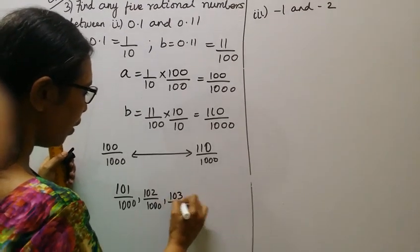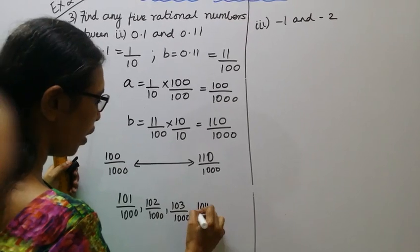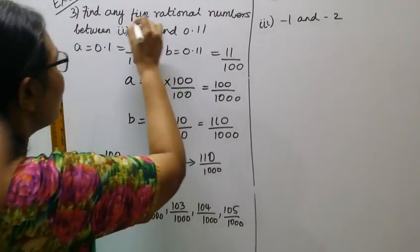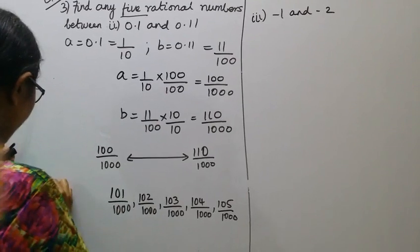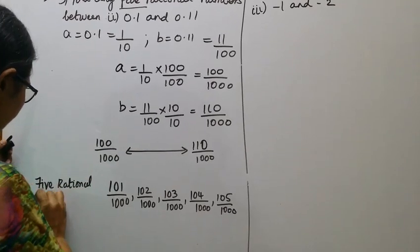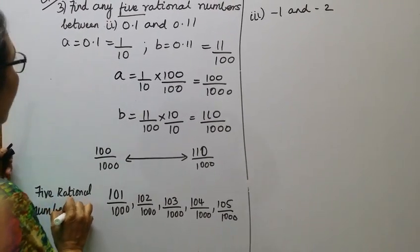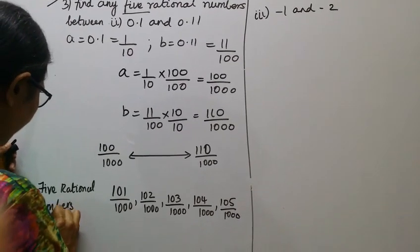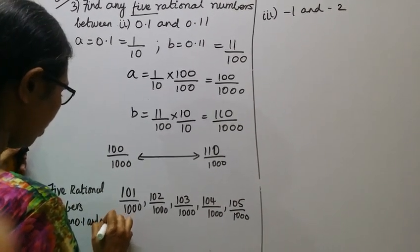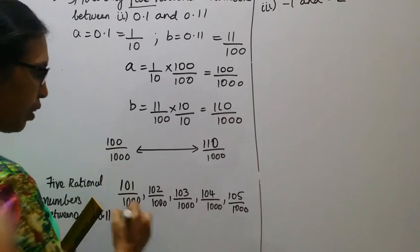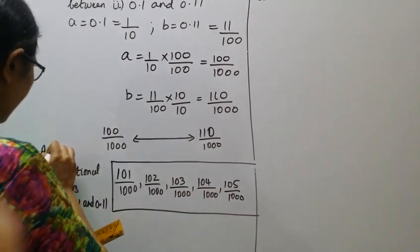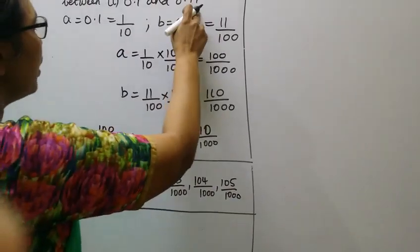So we can have 101/1000, 102/1000, 103/1000, 104/1000, 105/1000. Now 5 rational numbers between 0.1 and 0.11. This is the answer, any five rational numbers between 0.1 and 0.11.